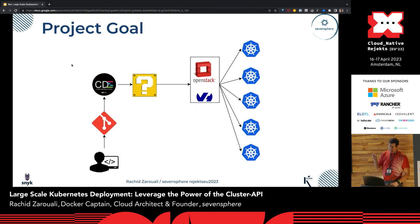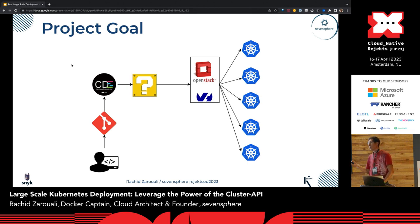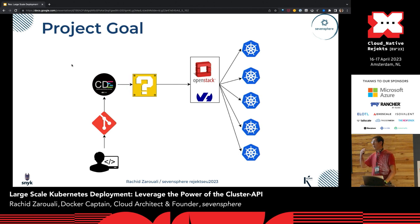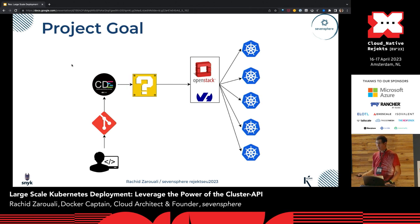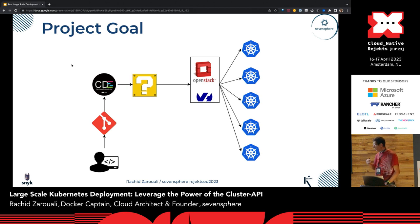What we were looking for is how we can move from one cluster to thousands of clusters at once. Meaning if we want to spin up a full region, we just want to do it with a single Git commit and leave it to the system to manage the deployment of hundreds or thousands of clusters at once — with reconciliation and all the control mechanisms.